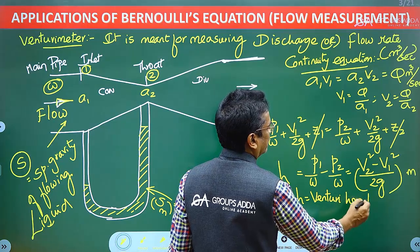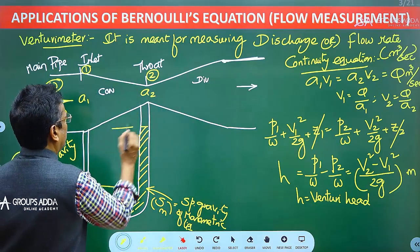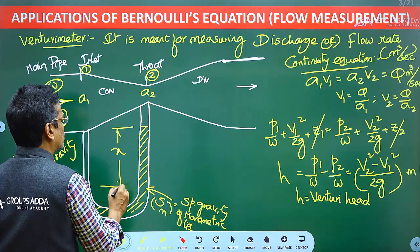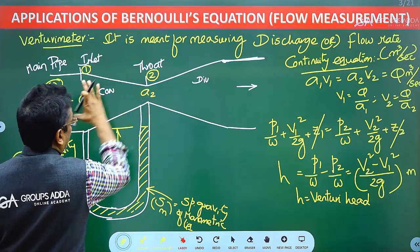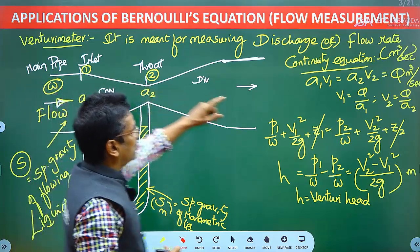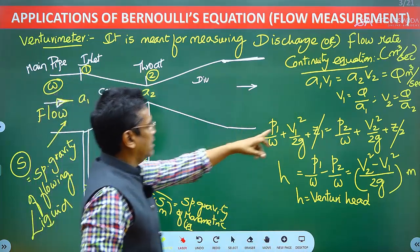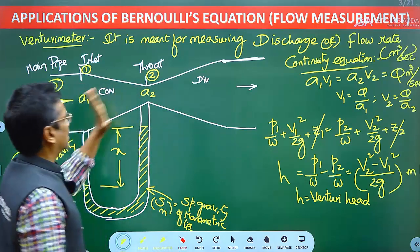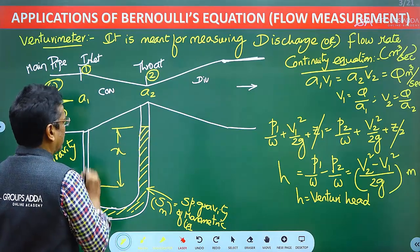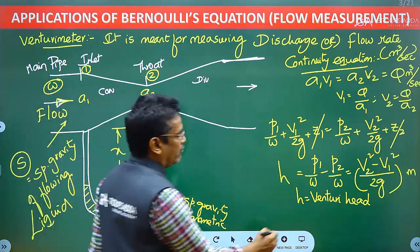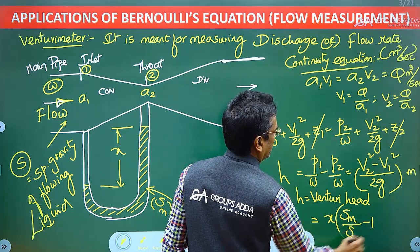H is called the Venturi head, measured in meters. As the area decreases at the throat according to the continuity equation, velocity increases; and according to Bernoulli's equation, the pressure decreases. This pressure difference is reflected in the manometric liquid levels. The Venturi head H is given by X times (SM/S − 1), where X is the difference in manometric liquid levels, SM is the specific gravity of the manometric liquid, and S is the specific gravity of the flowing liquid.